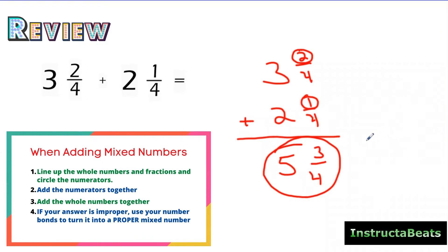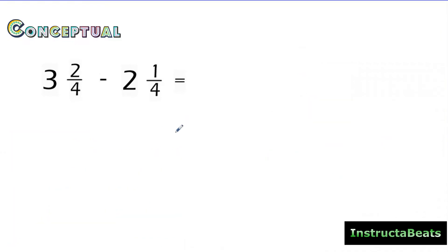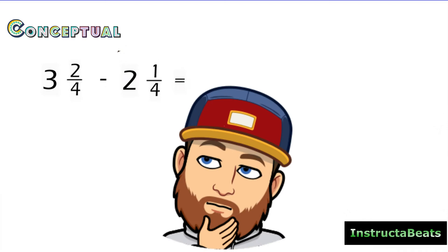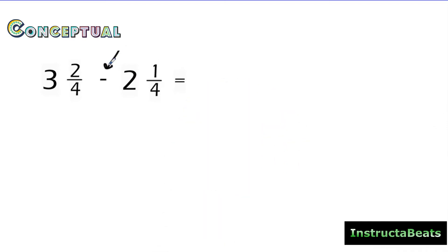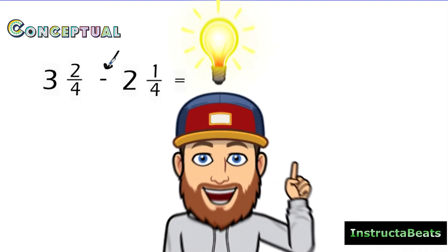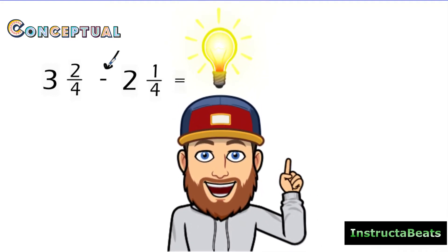If that was how we added 3 2/4 and 2 1/4, how would we subtract them? So we have the same mixed numbers, but now we want to subtract them. I have an idea, and I think it's going to be pretty similar to what we just did when we added them.